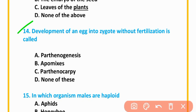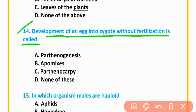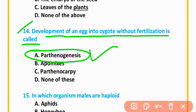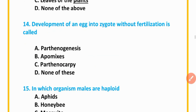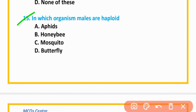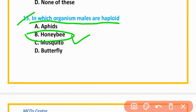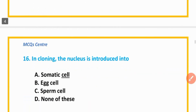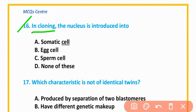MCQ number 14: Development of an egg into a zygote without fertilization is called parthenogenesis — option A is correct. MCQ number 15: In which organism are males haploid? Honeybee — option B is correct. MCQ number 16: In cloning, the nucleus is introduced into egg cells — option B is correct.